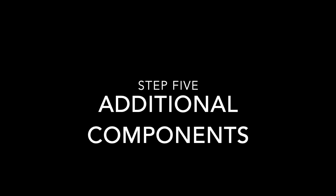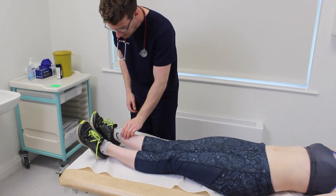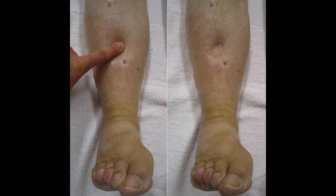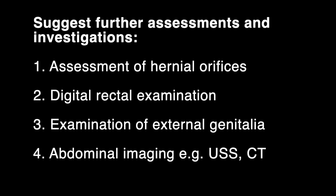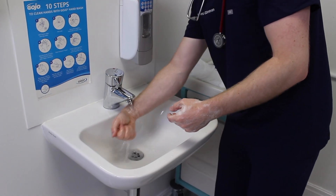Moving on to other assessments, assess for pedal oedema, which may suggest low albumin, for example caused by liver cirrhosis or a protein-losing enteropathy. You may also want to suggest further assessments and investigations, including assessment of the hernial orifices, a digital rectal examination, examination of external genitalia if indicated, and abdominal imaging. Once finished, explain that the examination is complete, thank the patient, then wash your hands and summarise and document your findings.